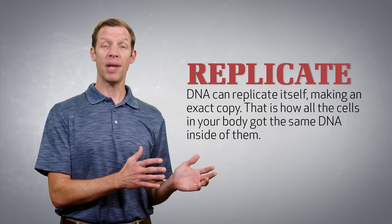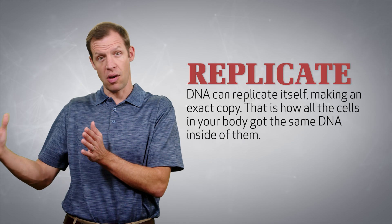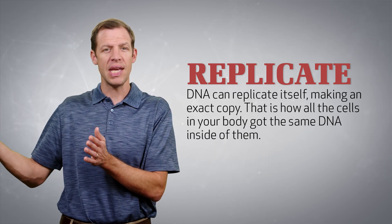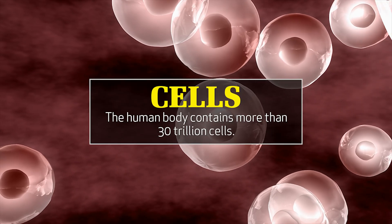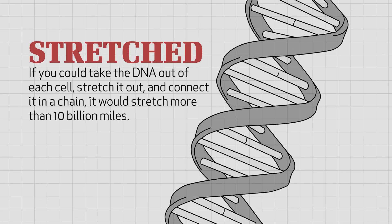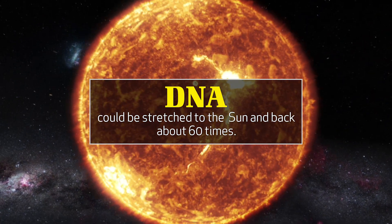DNA can also replicate itself, making an exact copy, and that's how every single one of the cells in your body has the same DNA. The human body contains more than 30 trillion cells. If you could take the DNA out of each one of your cells and stretch it out and connect them in a chain, it would stretch more than 10 billion miles — meaning it could go to the sun and back about 60 times.